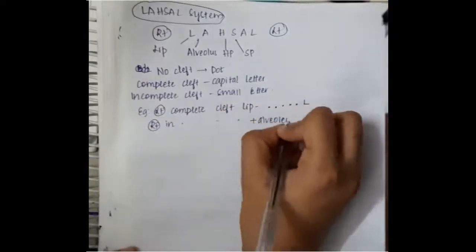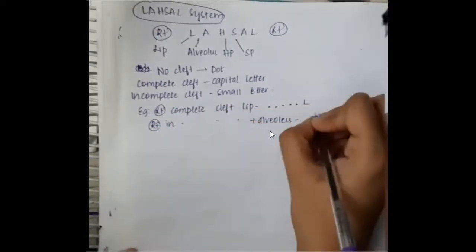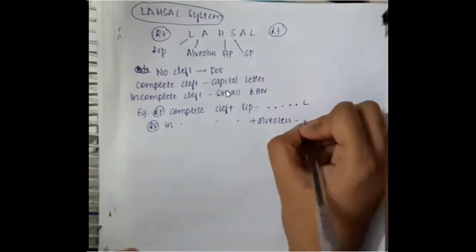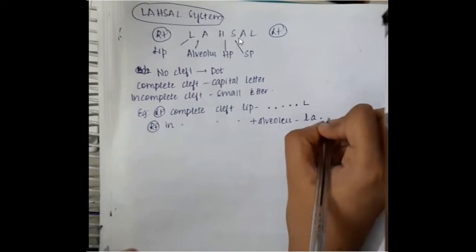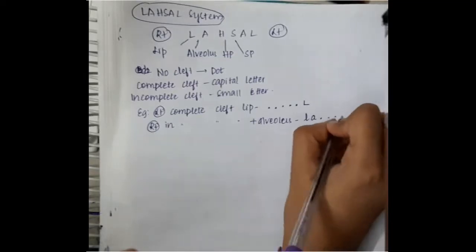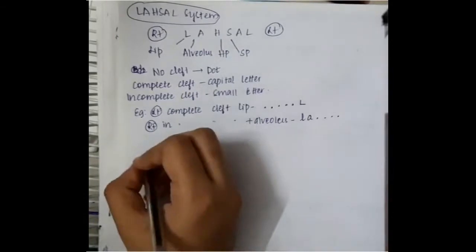If we see similarly, right incomplete cleft lip with alveolus. Here the cleft lip right side, it is incomplete, so you will put small l. Then alveolus is also incomplete, you will put small a. Whereas hard palate, soft palate, left alveolus, left lip are normal, so you will put dots for them. So this is how you will do Lashal system.